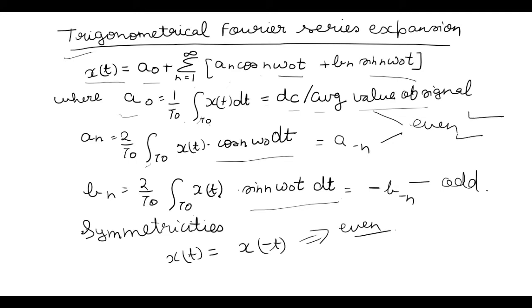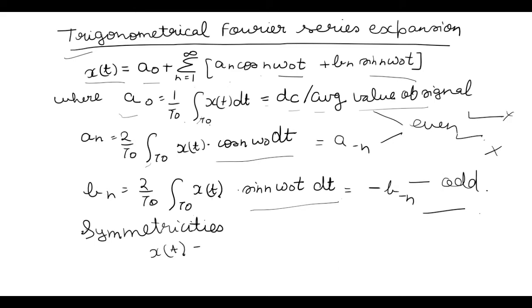But when x(t) equals minus of x(minus t), then x(t) would be called an odd function, and then only odd terms will be present, like bn, not a0 or an. Now if x(t) equals x(t plus T0 by 2), this is called half wave symmetry, and if this is true then only even harmonics will be present.